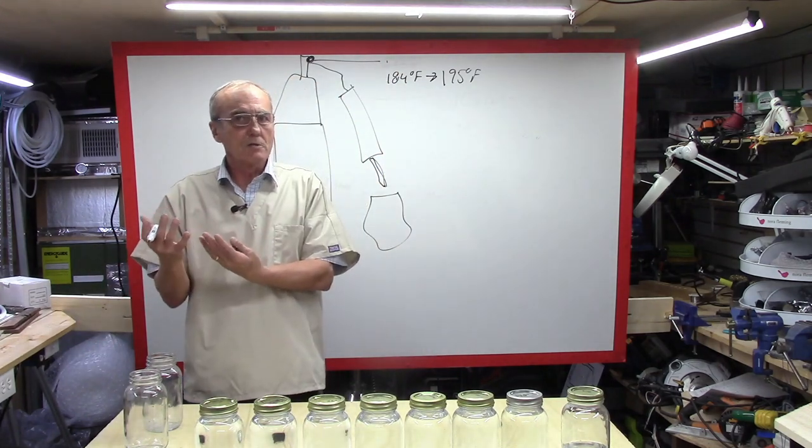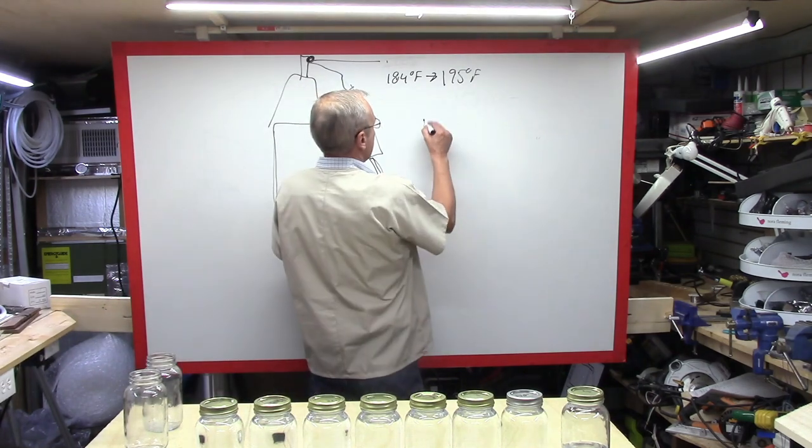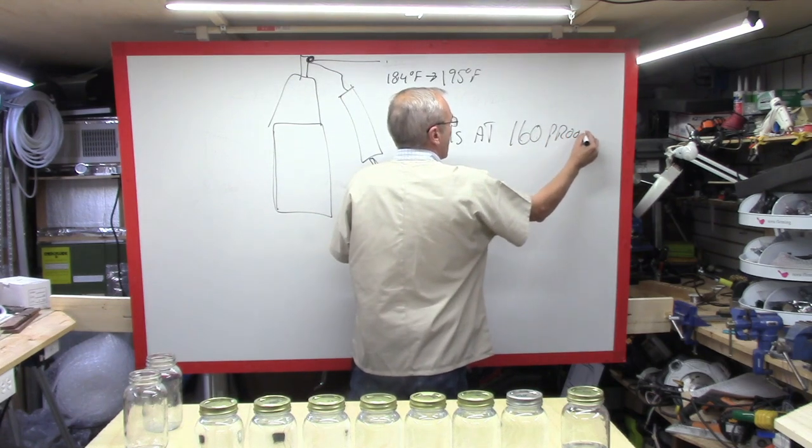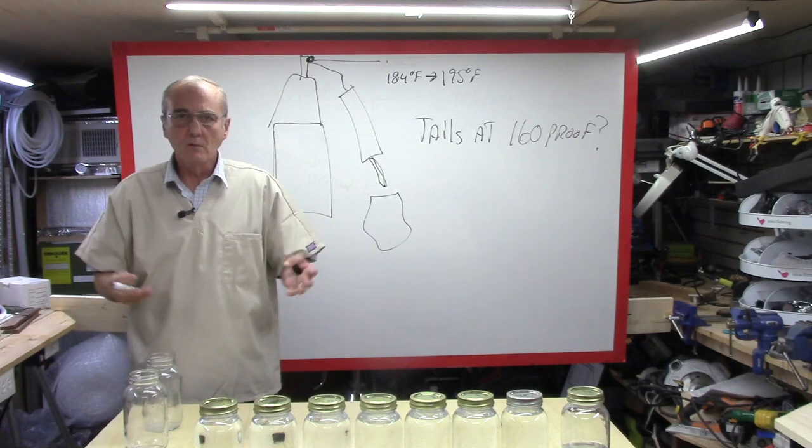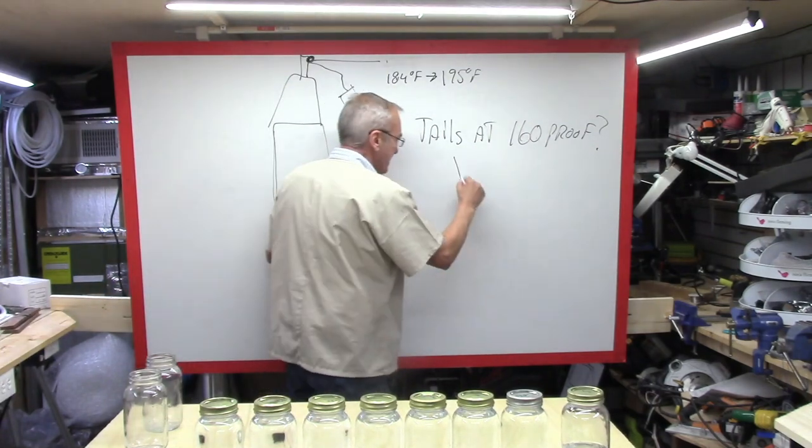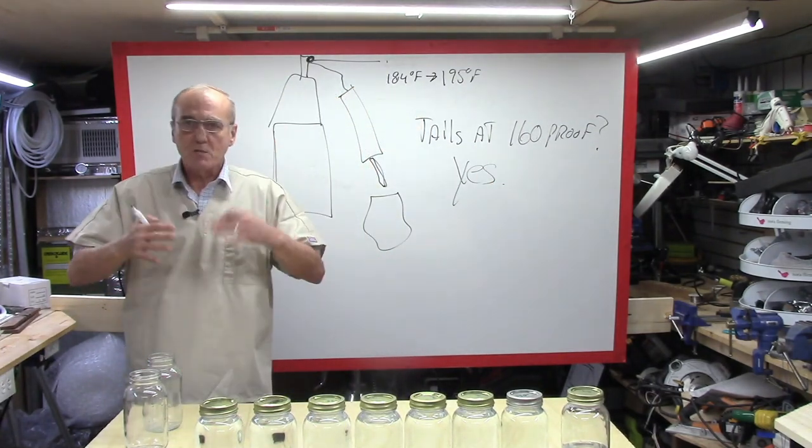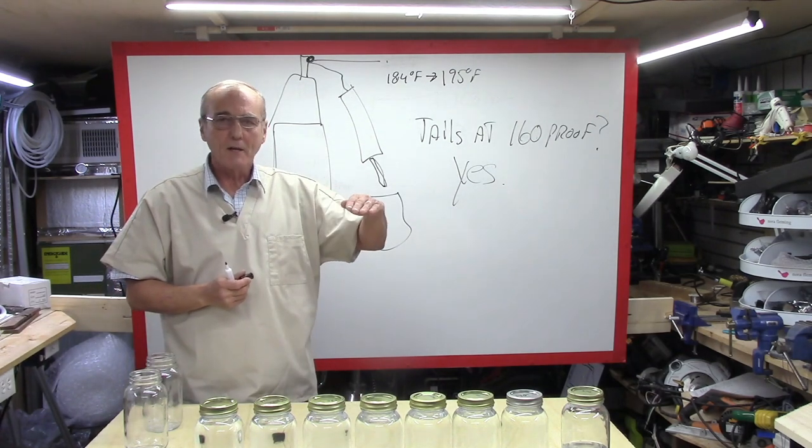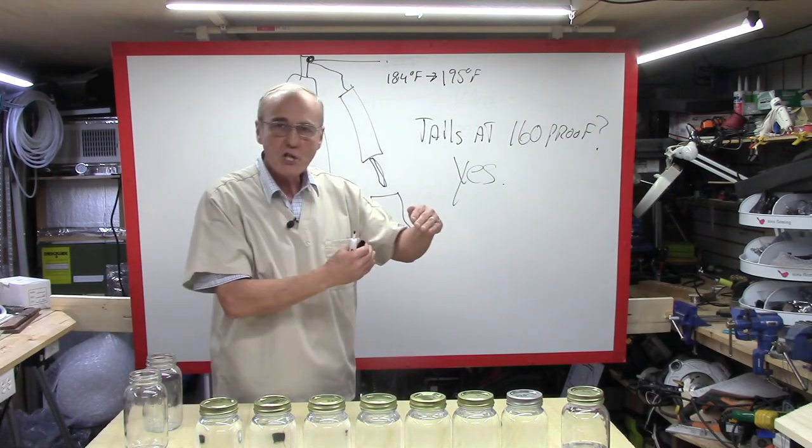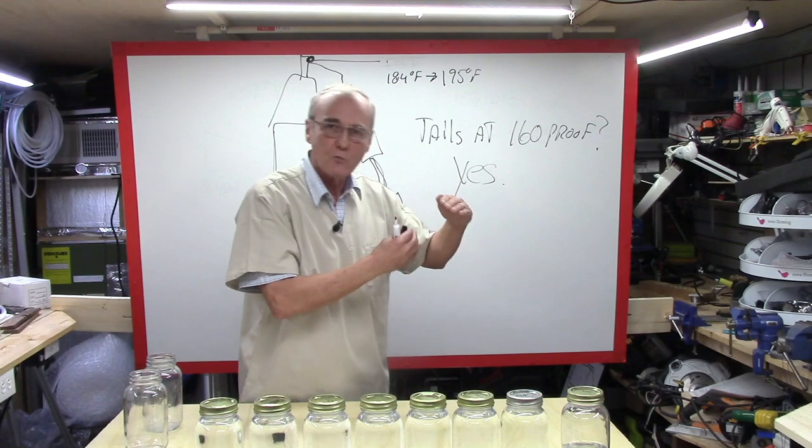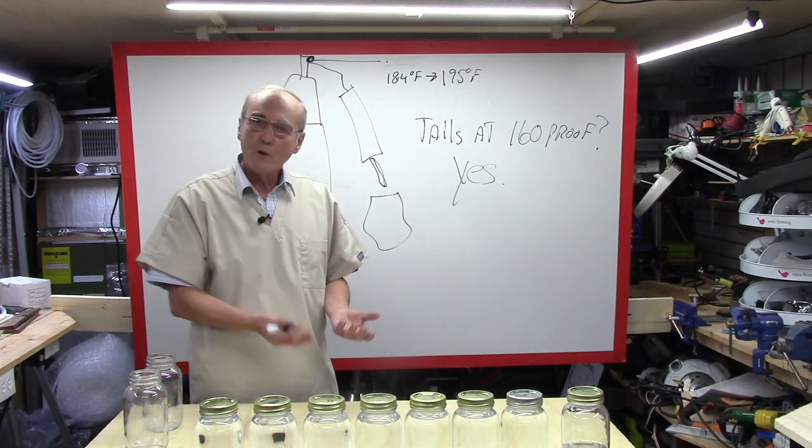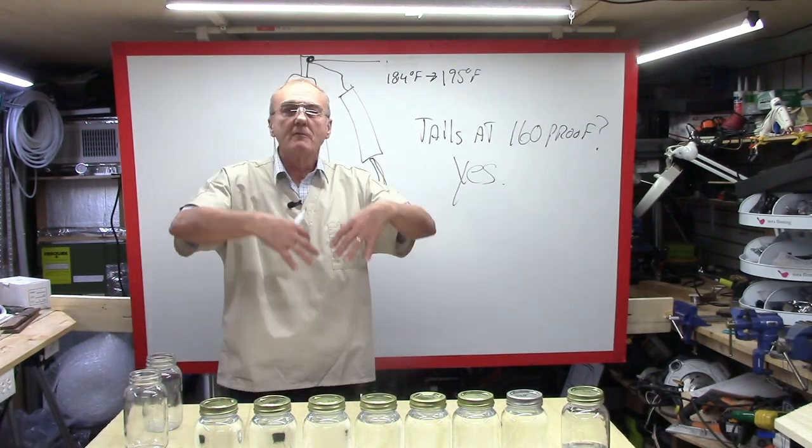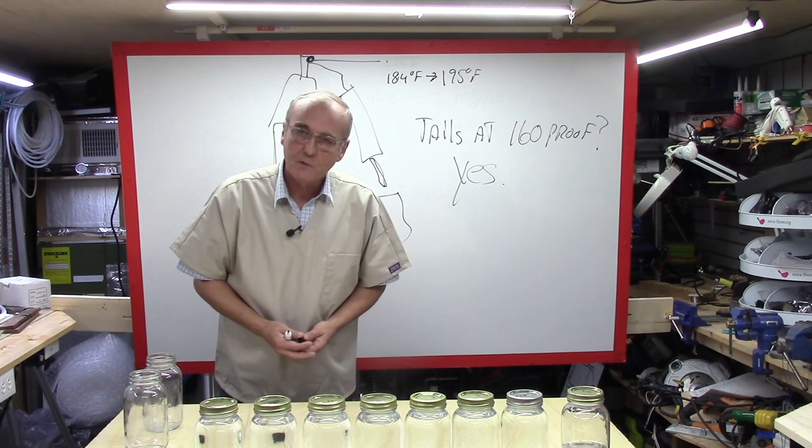So can you have tails at 160 proof? Tails at 160 proof? Is that possible? Why, absolutely, yes. Yes, that's possible. Is it likely? Well, if you're running it slow and methodically, no, it's impossible. But if you're pushing the envelope and you're trying to get that distillate to come out really, really fast, and you've increased the temperature to a degree, to that degree where it's pushing instead of allowing vapors to flow, well, then you're going to wind up with tails.